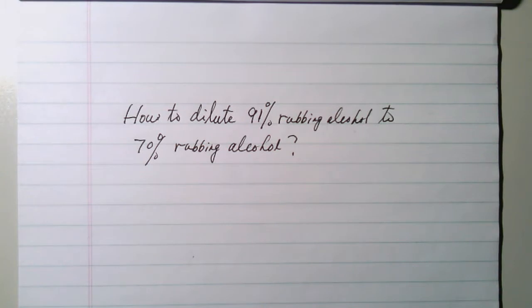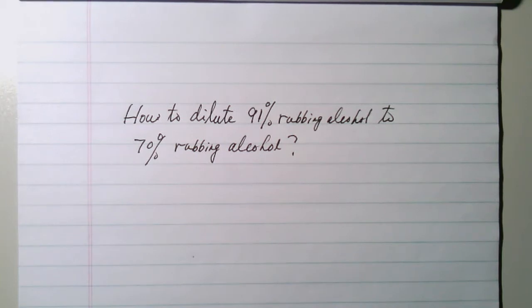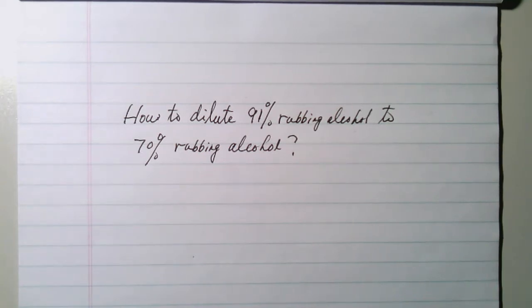Why is that? This is something beyond mathematics, so we will not talk about that. We will talk about how to dilute 91% rubbing alcohol to 70% rubbing alcohol by adding water. Let's take a look at a specific example.